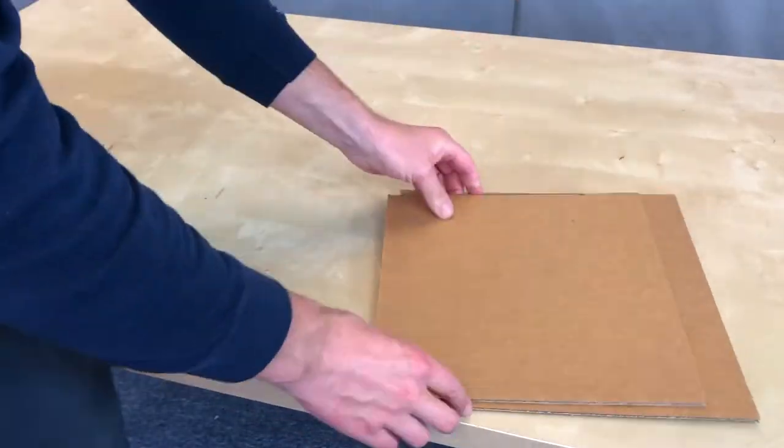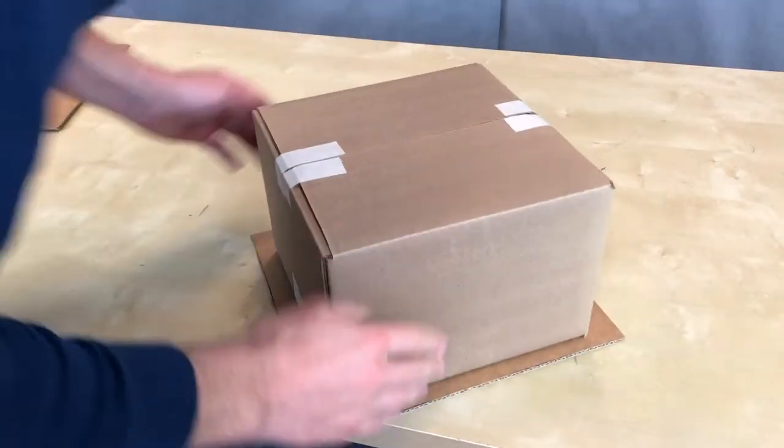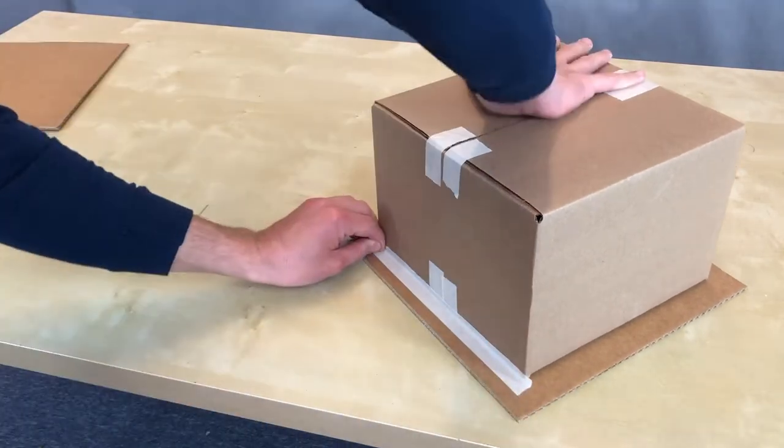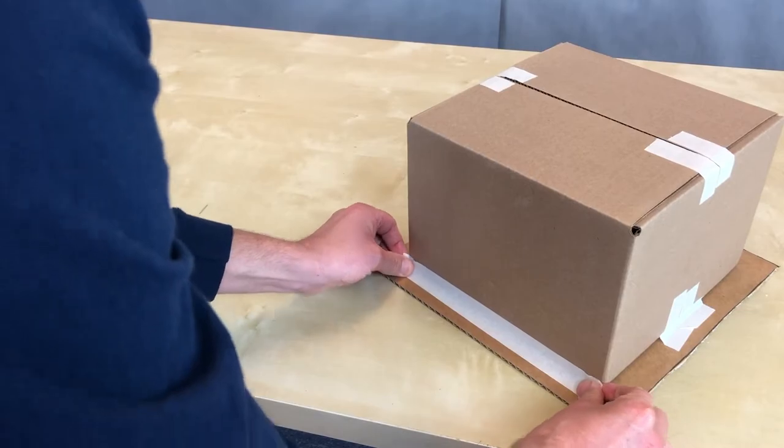After you cut your first labyrinth edge, use it as a template for your second labyrinth edge. Center the box on the labyrinth edge and then use long strips of tape to connect the labyrinth edge and the box together. Repeat on every side of the box and for the other labyrinth edge.